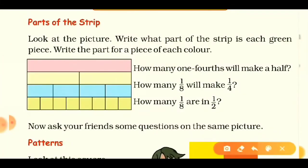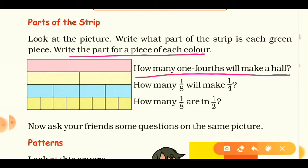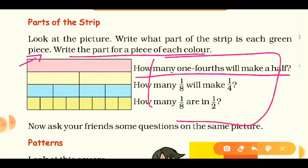Our second topic is parts of the strip. Look at this picture — what part of the strip is each color? First we have the pink color completely filled, so we write it as one. The second strip is divided into two equal parts, so each part is one upon two. The blue strip is divided into four equal parts, so each part is one upon four.